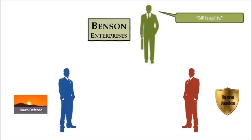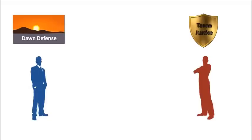Tanner Justice stand down from defending Bill. Now, with no one to protect him, Bill has no other choice but to accept his punishment. Benson Enterprises is a highly respected firm, and no other security firm will agree to defend him against the force threatened by Dawn Defence — unless new evidence emerges, or the reputation of Benson's is brought into question.